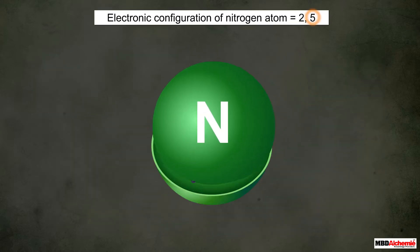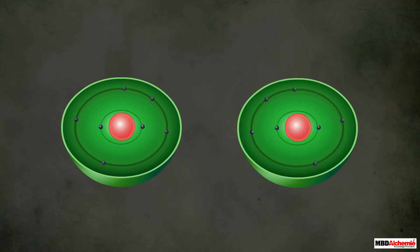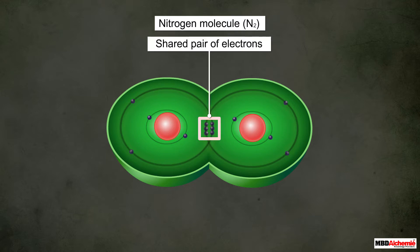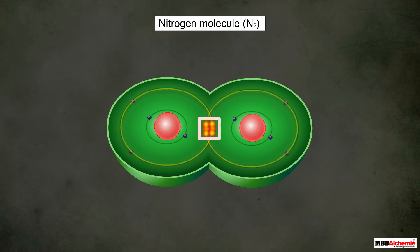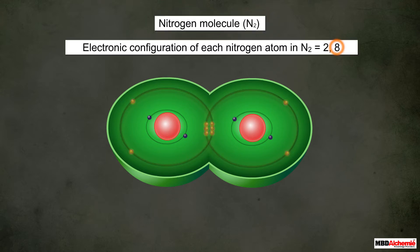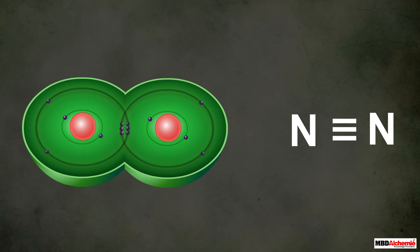Now consider a nitrogen atom. It has an electronic configuration of 2, 5, so it needs three more electrons to complete its octet. It can get those from another nitrogen atom. Two nitrogen atoms come together, and each shares three of its electrons with the other, giving rise to three shared pairs of electrons belonging to the valence shell of both atoms. This forms a molecule of nitrogen in which each nitrogen atom has eight electrons — a complete octet.